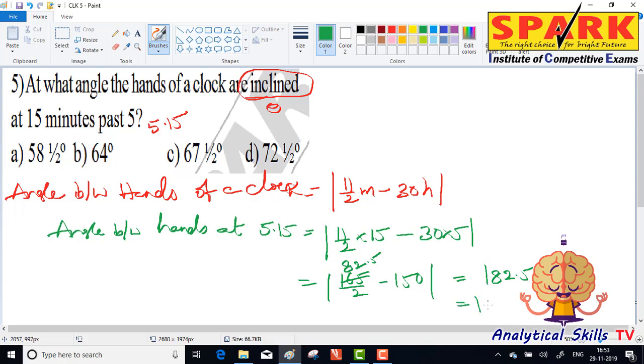So that equals the modulus of minus 67.5. Look, that's 67.5, which is 67.5 degrees. That's the answer.